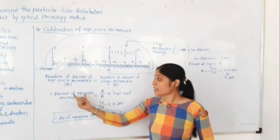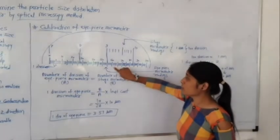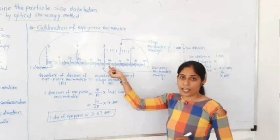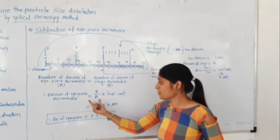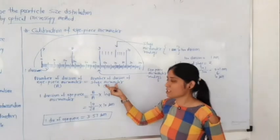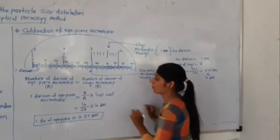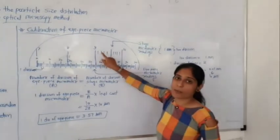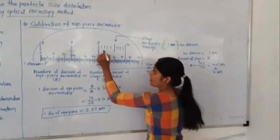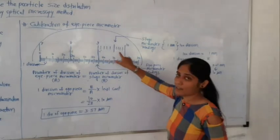We calculate one division of the eyepiece micrometer. One division is the space between two lines. The formula is: one division of eyepiece micrometer = (B / A) × least count. Counting stage micrometer divisions gives us 10 divisions total. Counting eyepiece micrometer divisions shows 28 divisions are included within those 10 stage micrometer divisions. So A = 28 and B = 10.